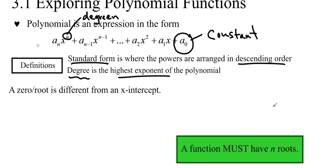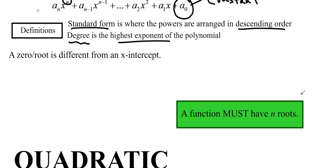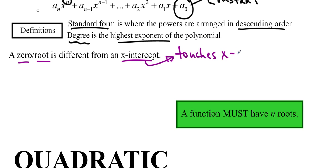And one more definition for now. You've often probably heard teachers use zero, root, and x-intercept interchangeably. But now we're going to have to learn a little bit of a difference. The x-intercept is wherever the function touches the x-axis at certain places — that's called the x-intercept. Now, a zero or a root is actually when the function is equal to zero.